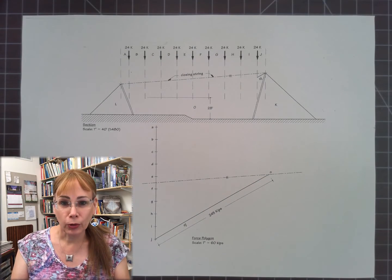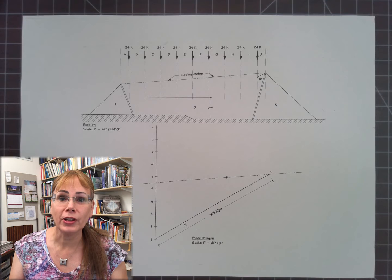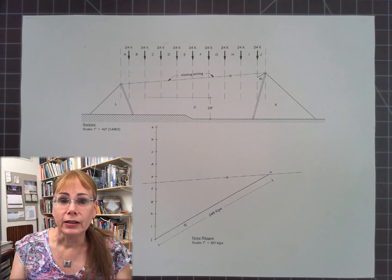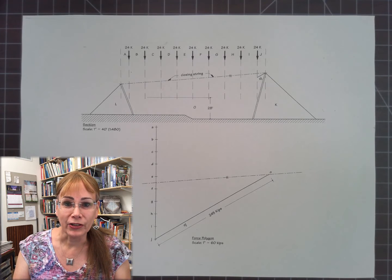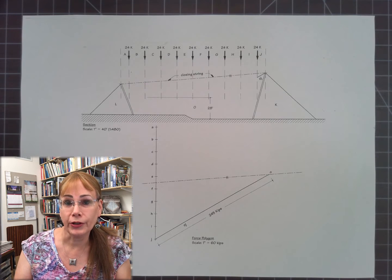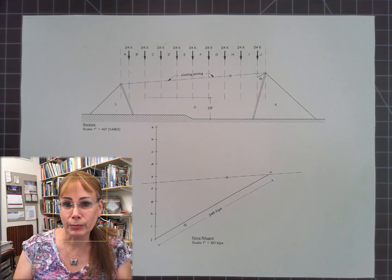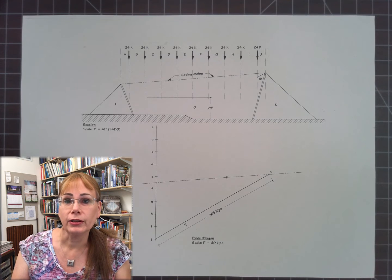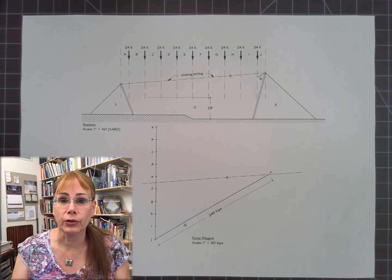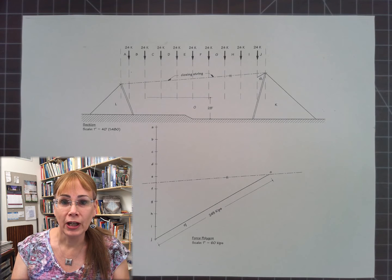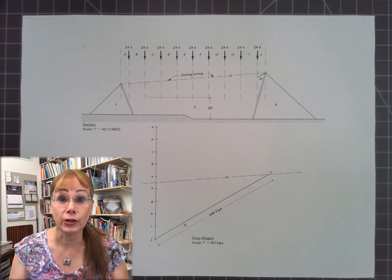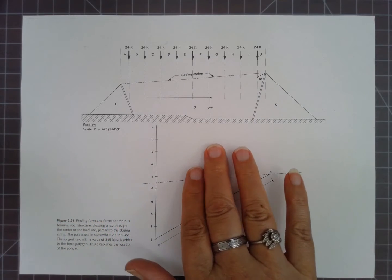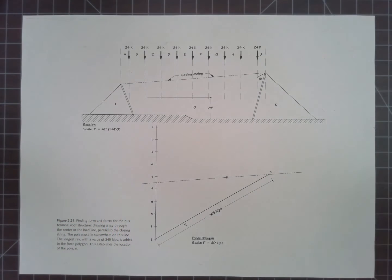In Chapter 2 of Form and Forces by Edward Allen and Václav Selesky, a cable structure is introduced that is analyzed by Graphic Statics. What I'd like to do here is go through the process of that example in order to make it very clear as to the steps that you go through in this type of analysis. As you'll see, it's incredibly simple to apply Graphic Statics to a cable structure.